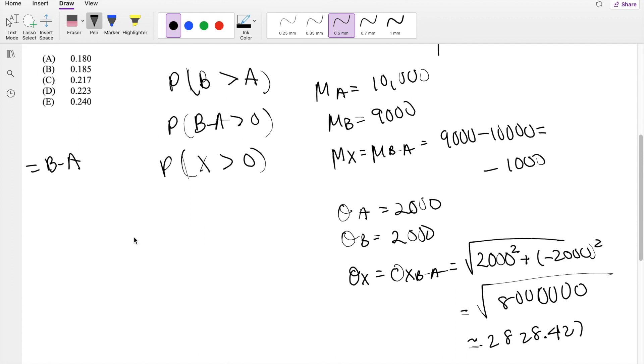All right, we're ready to normalize this. So the probability of X minus the mean of X divided by standard deviation of X is greater than 0 minus the mean of X, which we know is negative 1,000, so that's plus plus. Negative negative, which makes it positive. Divided by standard deviation of X, which is 2828.427. This right here is the definition of Z, is greater than 0.3535.